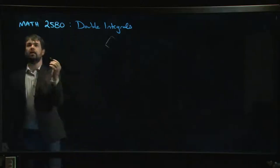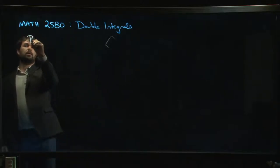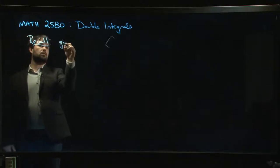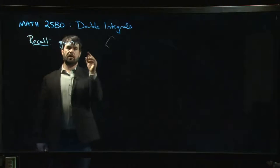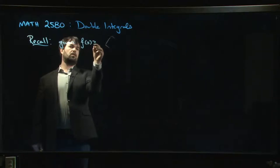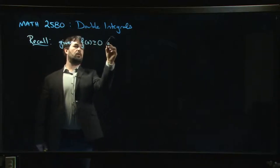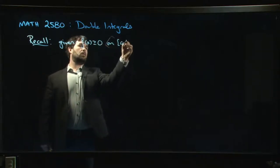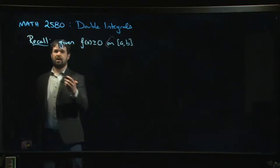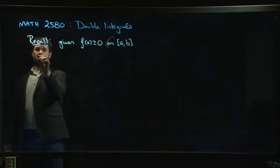Just as a reminder, in Calc 1, if you're given some function, let's say f of x, which is non-negative on some interval from a to b, you have this idea of area under a curve, right?